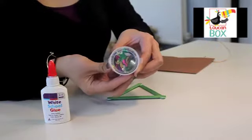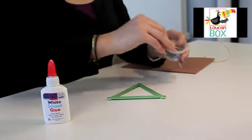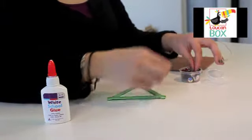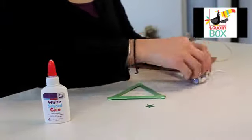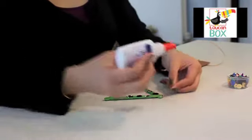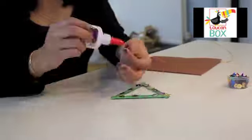Next you're going to take your pack of sequins and choose which sequins you want to put onto your tree. Once you've chosen your sequins, take your glue and glue each sequin down onto your tree.